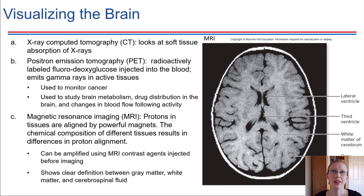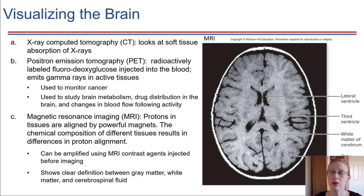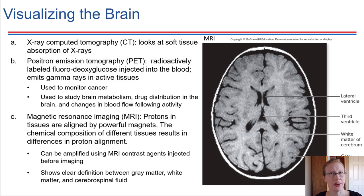When it comes to imaging different regions of the brain, there are a variety of tools available, and it depends on what we want to look at — whether we want to look at structures or whether we want to look at blood flow. Depending on what we want to see, we would use a different imaging technique.